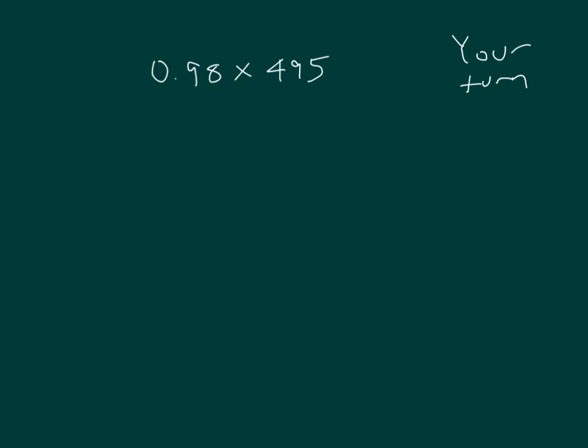Your turn. Estimate the product first, and then use standard algorithm to solve. It's about 1 times 500, which equals 500. And then our standard algorithm, 98 hundredths times 495.